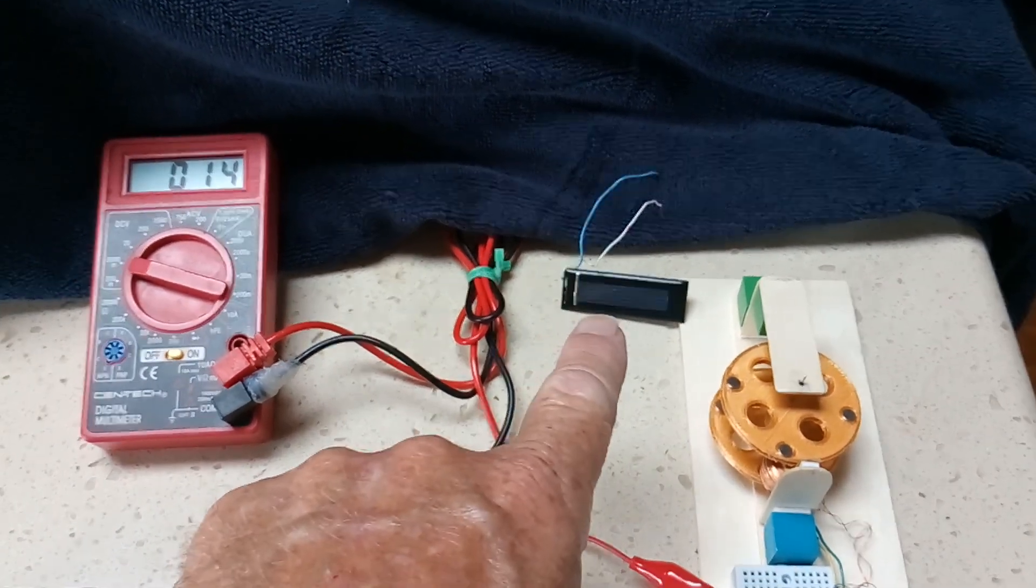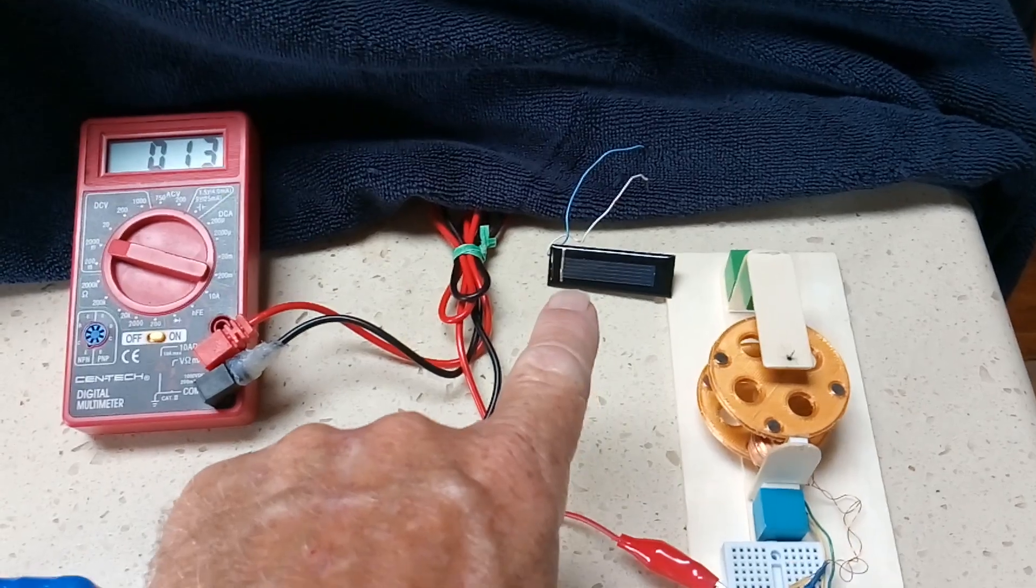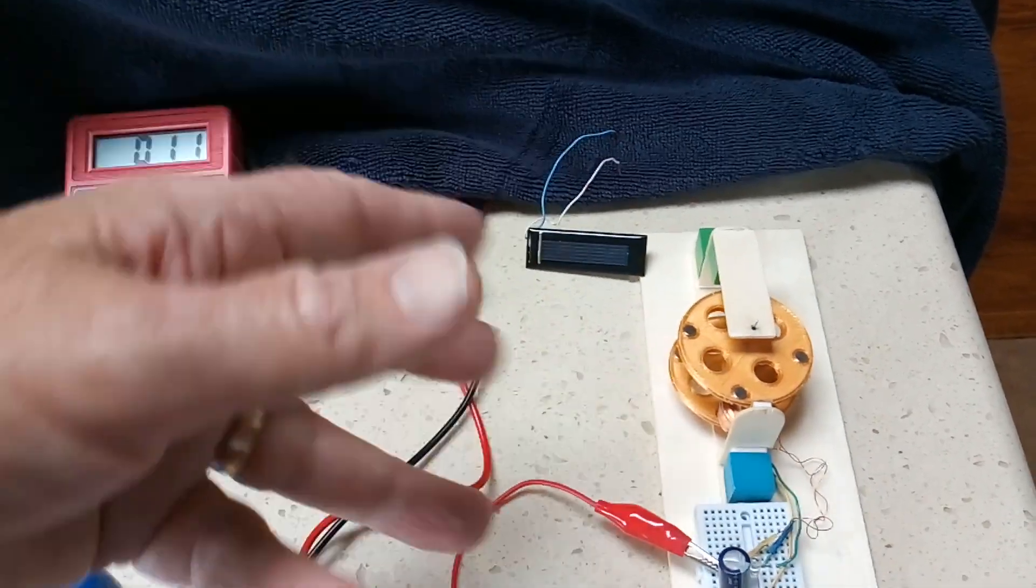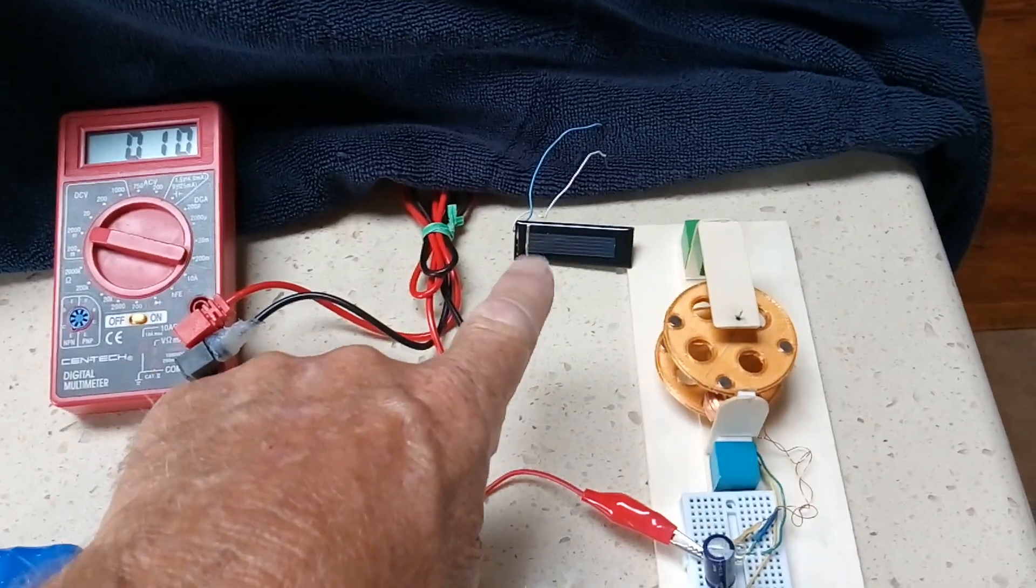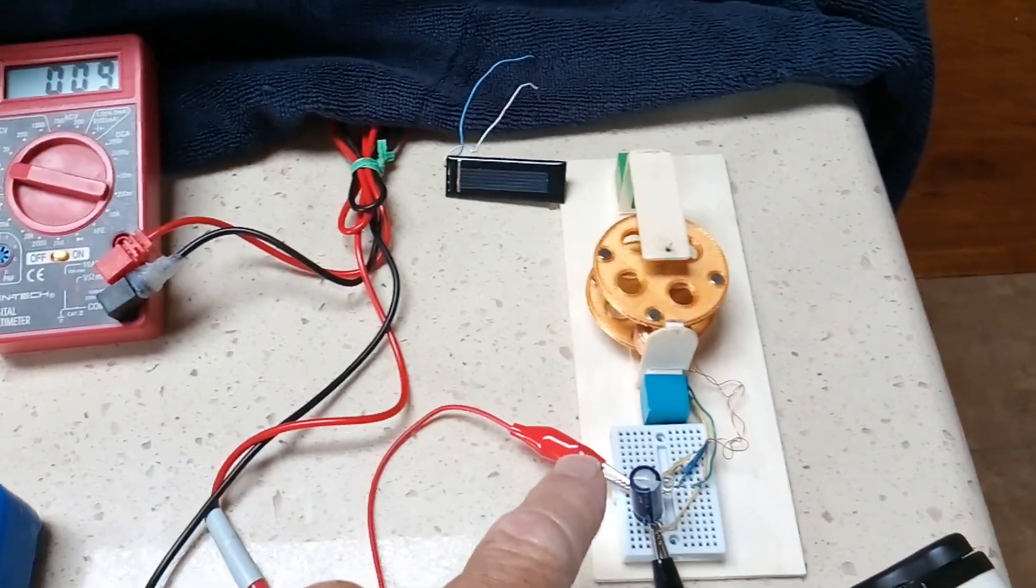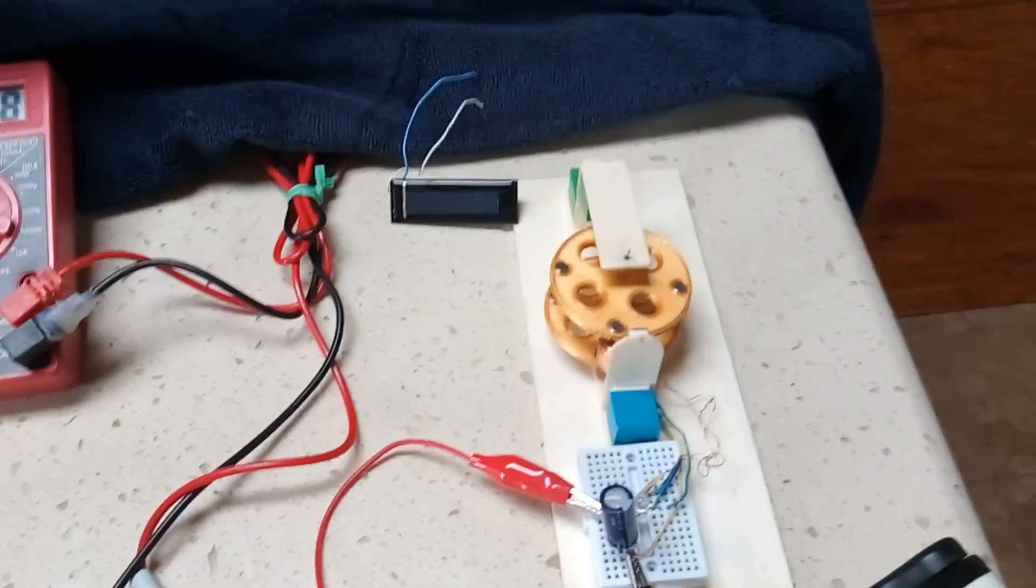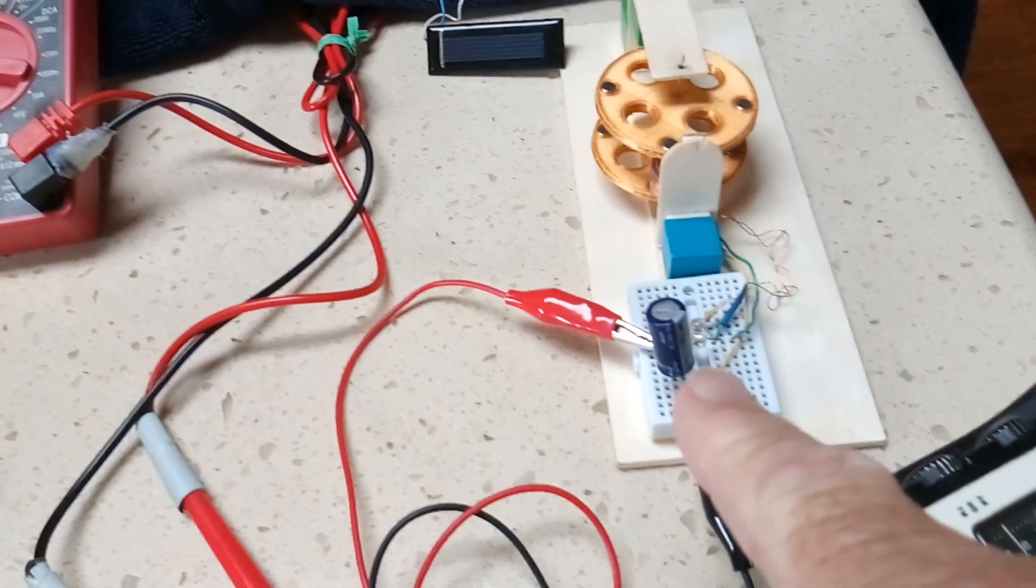That solar cell had enough amperage to run this, as I showed in the last video. Now this is just a 1000 microfarad super cap to store energy between the pulses, and you can hear a little bit of juice still in it.